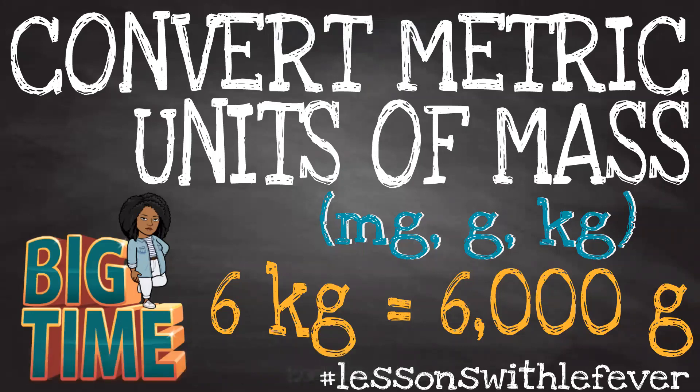Hello and welcome to Lessons with Lefebvre. Today our objective is: I can convert metric units of mass. Metric units of mass are known as milligrams, grams, and kilograms. For example, six kilograms is equivalent to 6,000 grams.